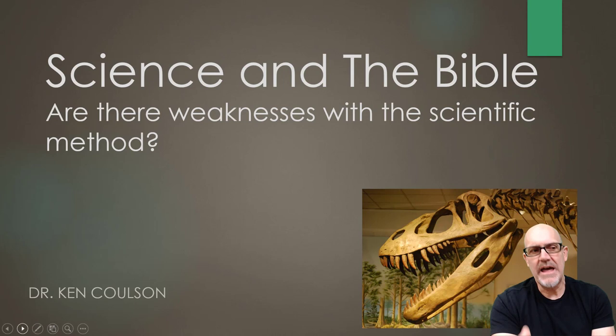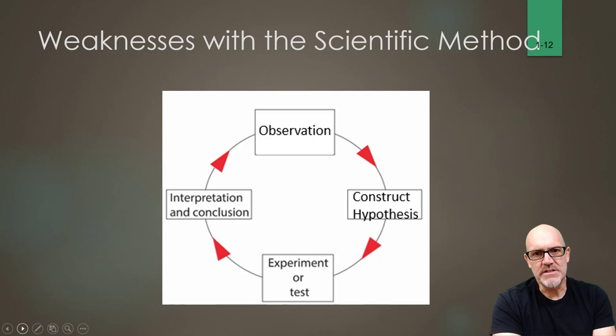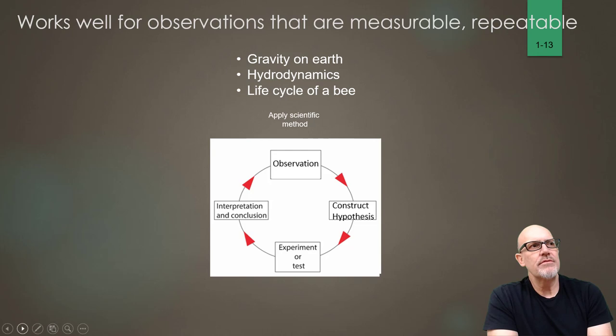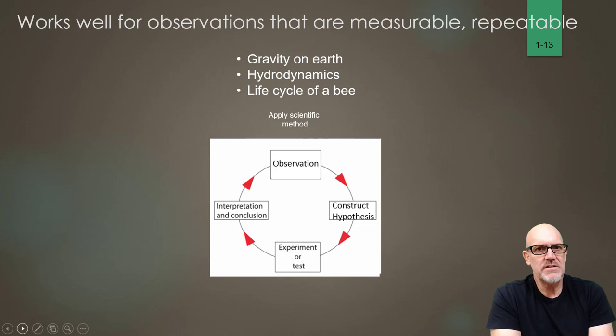It turns out there are weaknesses with the scientific method. The scientific method works really well for observations that are measurable and repeatable. For example, gravity on Earth, hydrodynamics, the life cycle of a bee. Gravity on Earth — I can pick up a rock and drop it, and that phenomenon is going to occur as many times as I want, because I'm looking at gravity on Earth. Hydrodynamics is simply the way that forces act on water, and I can do that as well.